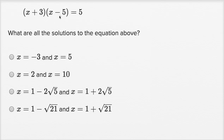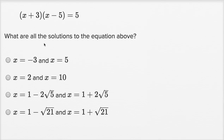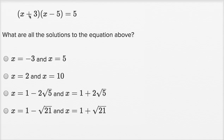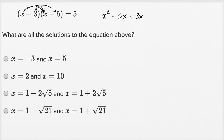So we actually have to do a lot of algebraic manipulation here to get it into that form. The first thing I would do is multiply out (x + 3)(x - 5). That's going to be x times x, which is x squared, plus x times negative five, so minus 5x, plus 3 times x, so plus 3x, plus 3 times negative five, so minus 15. And that's all going to be equal to 5.